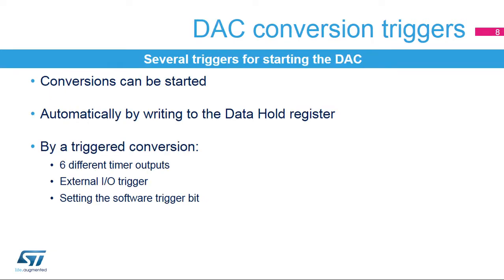DAC output conversion is started by writing to the data hold register using software. Six different timer outputs, an external I/O, or software can trigger a DAC conversion.